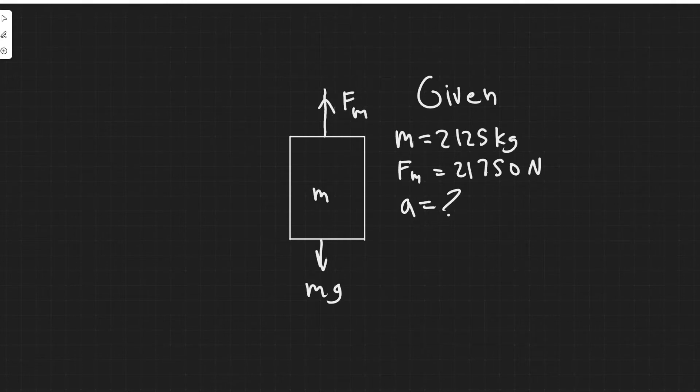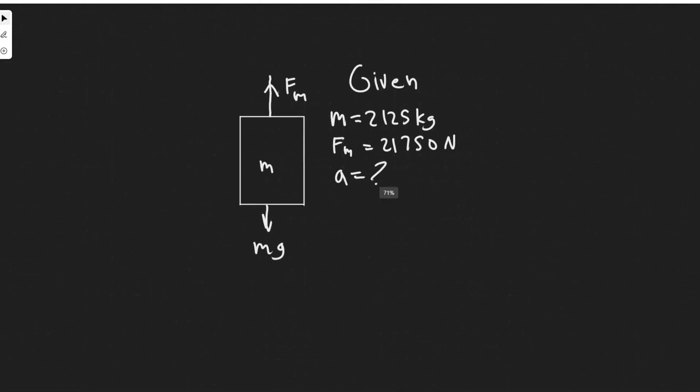So F_n we can assume is just this cord. The elevator has a cord that's pulling it up which has a maximum force of 21,750 newtons. This could range realistically but they just tell us the max. So the way we do this is we sum up the forces along this direction here.